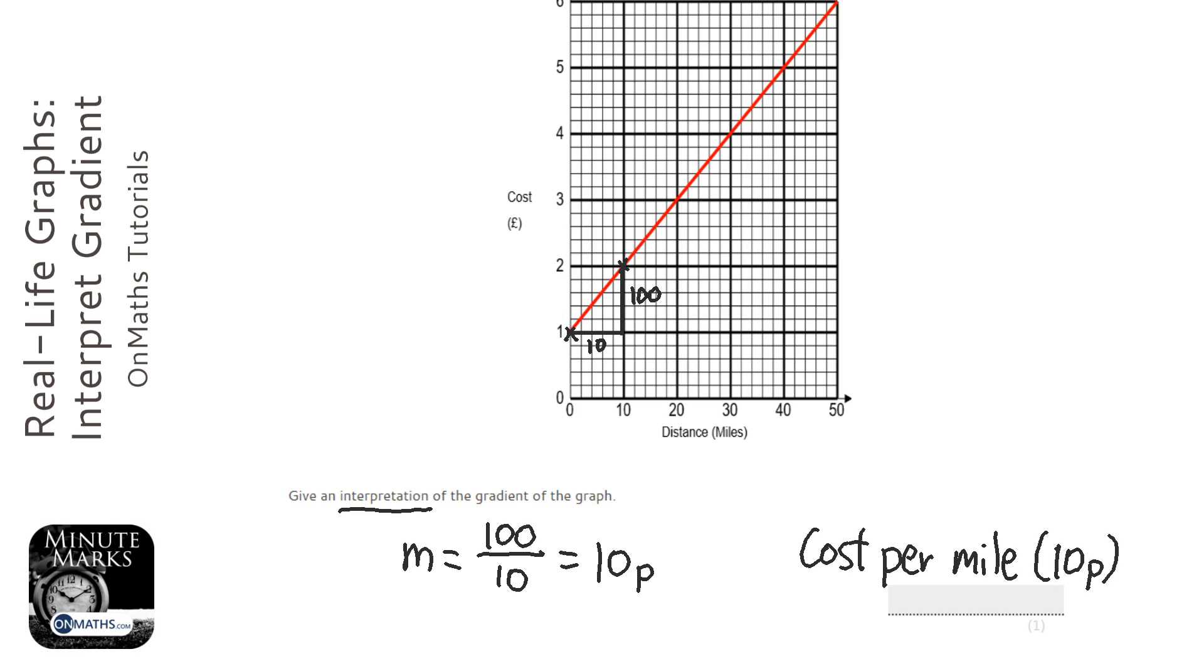Now it could be that just writing the cost per mile for this question would give you the mark, but if you actually write the gradient as well, then you definitely get the mark. And sometimes it will ask you for the gradient and then ask you to interpret it.